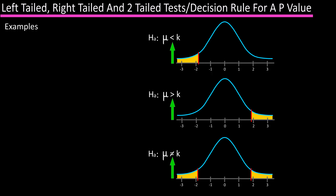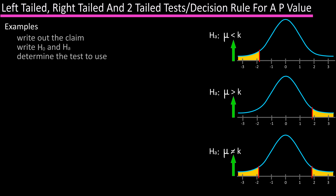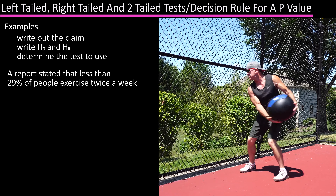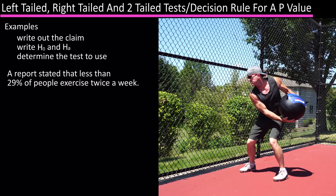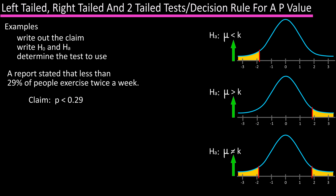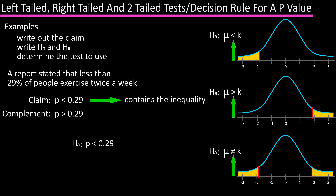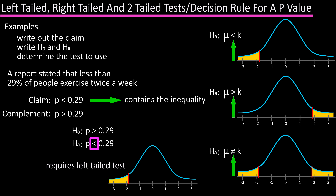Let's go through some examples about deciding which test to perform. For each example, we'll write out a claim mathematically, write out the null and alternative hypotheses, then determine the appropriate test. Example one: a recent report stated that less than 29% of people exercise twice a week. The claim is that p is less than 0.29. H sub A is p less than 0.29, and the null hypothesis is p greater than or equal to 0.29. Since the alternative hypothesis has the less-than inequality, this requires a left-tailed test.